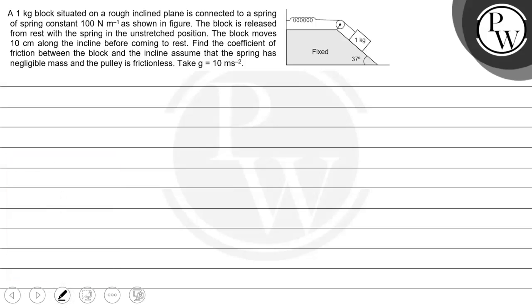Hello, let's read the question. The question says that a 1 kg block situated on a rough inclined plane is connected to a spring of spring constant 100 N per meter as shown in figure.